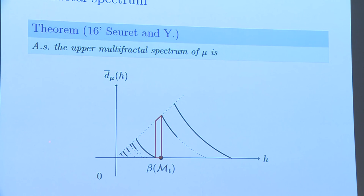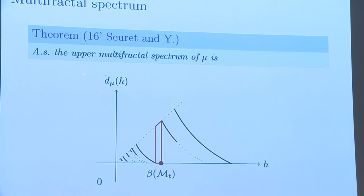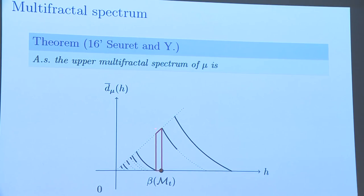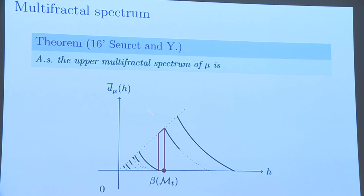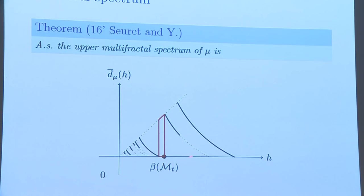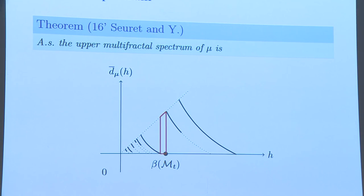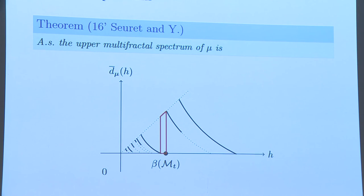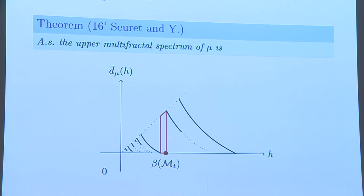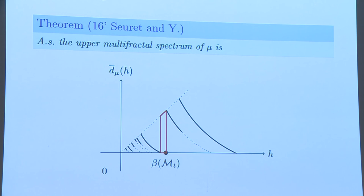The result is the following. The upper multifractal spectrum of this measure is this, in fact, this is a random mapping, which is the superposition of all this kind of curves. It gives also a random fractal effect. Thank you for your attention.